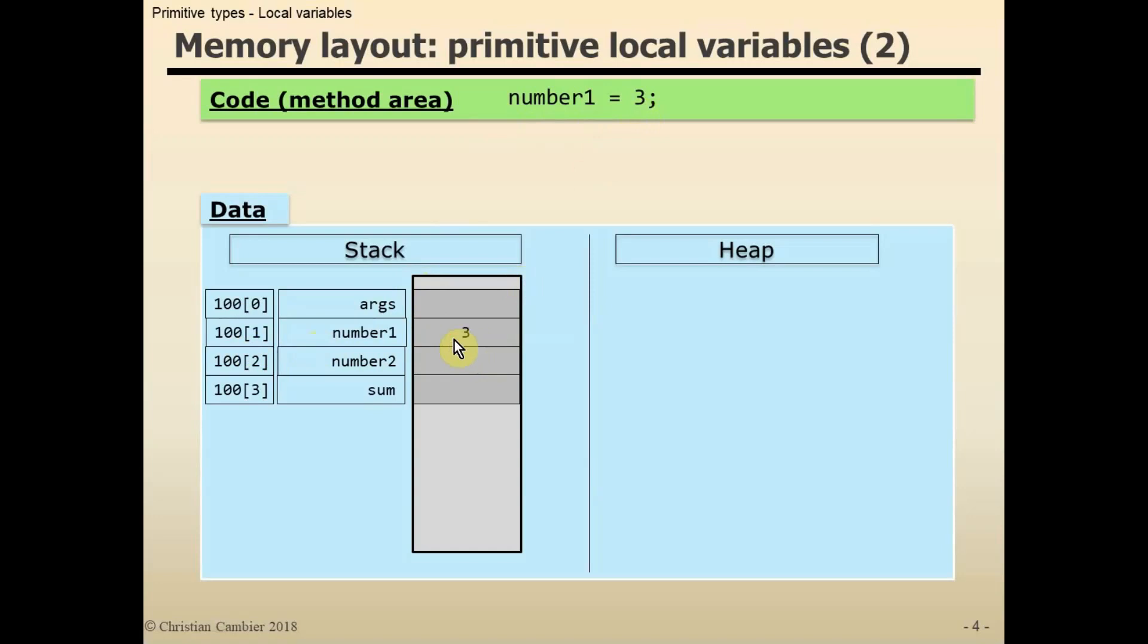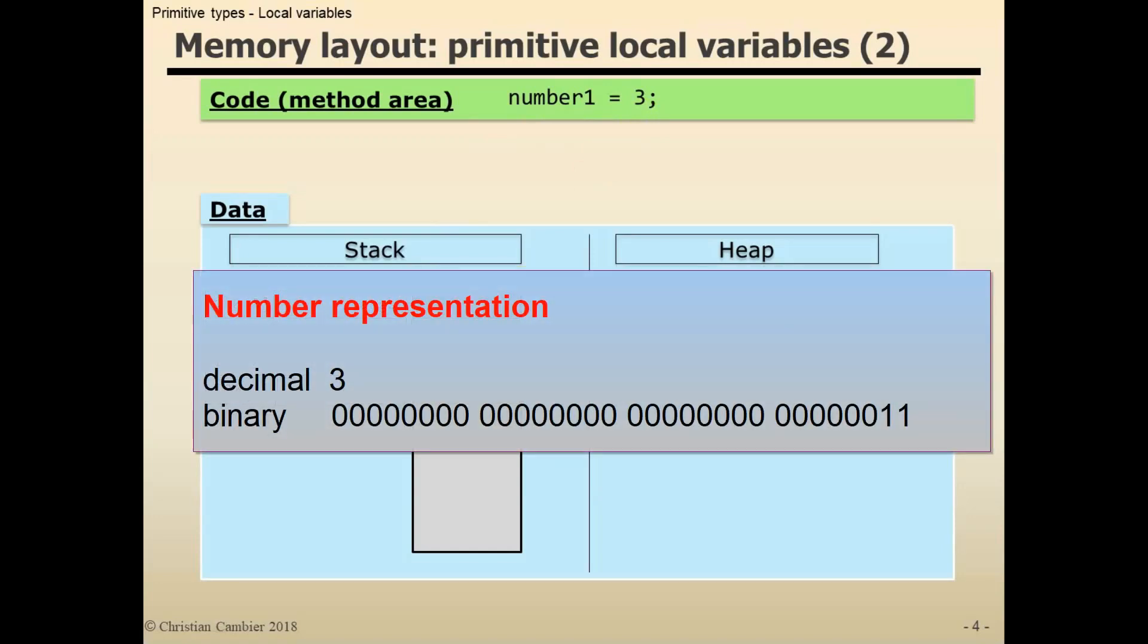Since everything is stored in a binary format, the internal representation will be the binary representation of the value 3, which consists of 30 bits of 0 plus 2 bits of 1. But I'll use the decimal notation to make it more readable.